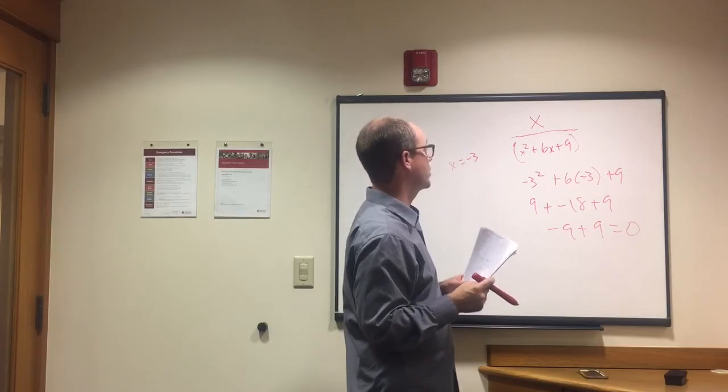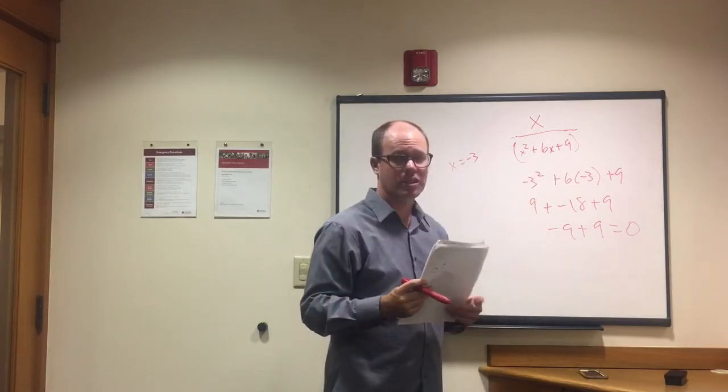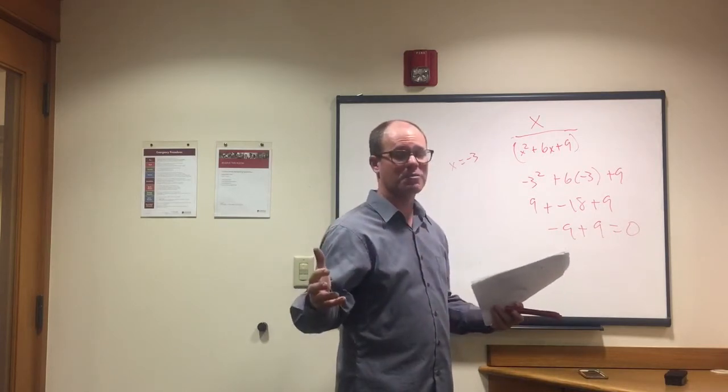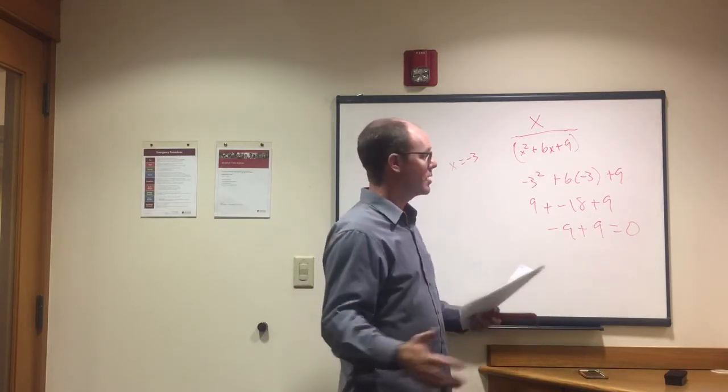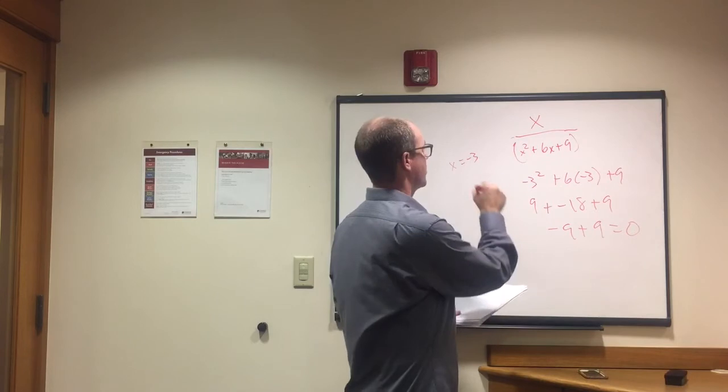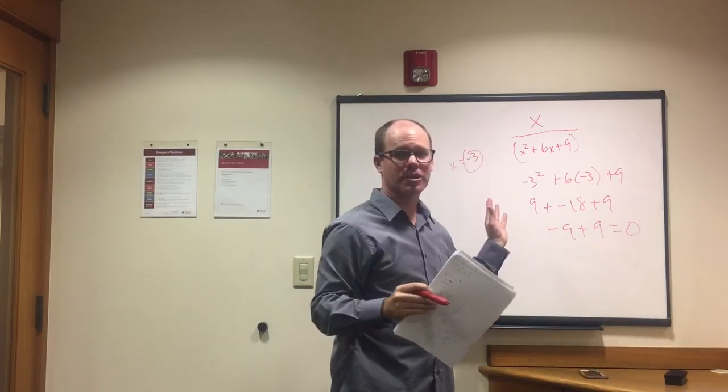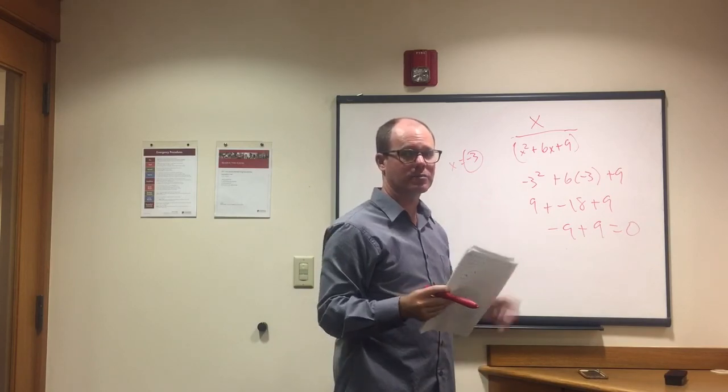So when x is negative 3, the denominator ends up being zero. We can't have that. But any other number works. So the answer to all this, pretty long-winded way of explaining it, but the only way to get comfortable with it, is that the domain is all numbers except for negative 3, and any other number gives us a good answer.